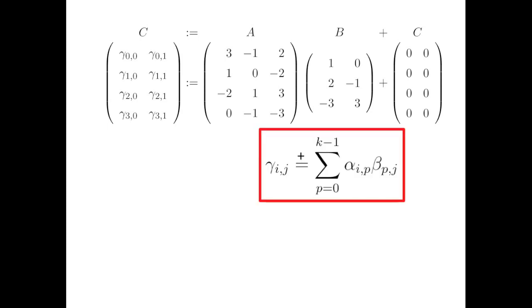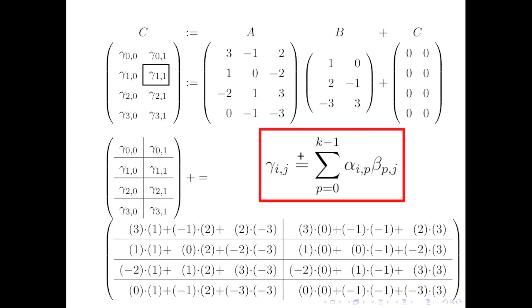We saw last week that each element of c must be updated with the result of the dot product of a row of a with a column of b. Indeed, the ij element of c has to be updated with the result of the dot product of the ith row of a with the jth column of b.